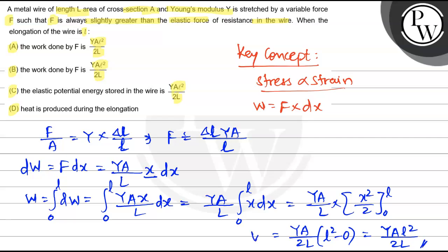The total work done is YAL²/2L. This matches the first option. There seems to be a printing mistake in option B, as options A and B are the same. So A is the right option.